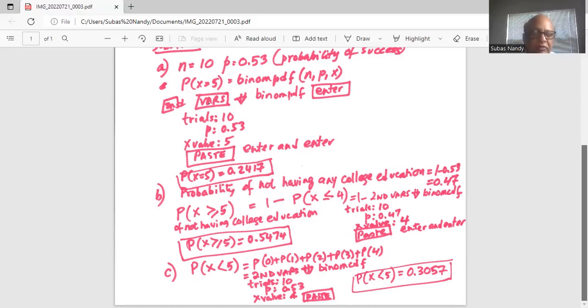not 0.47, 0.53. And x value is four, paste, enter and enter. Answer is 0.3057.